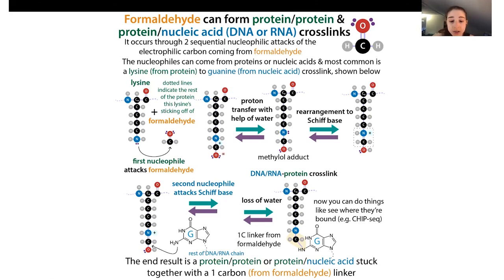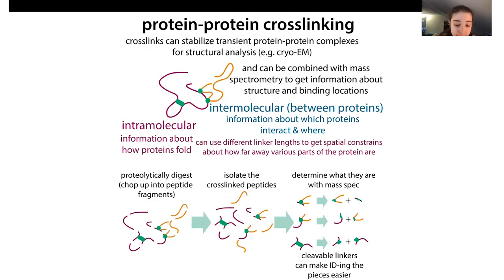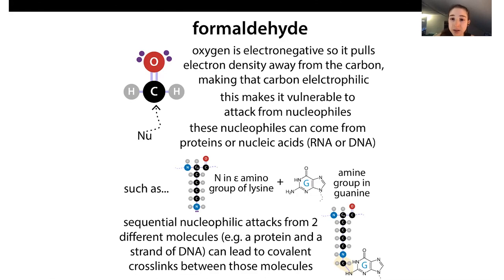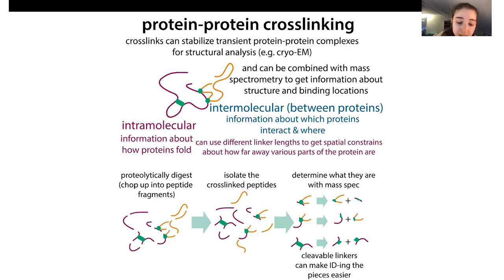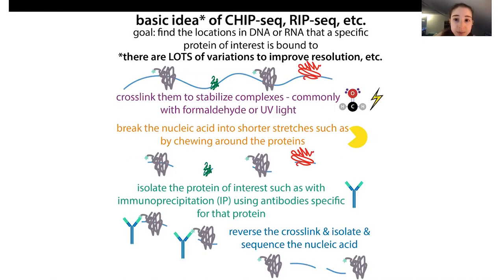Now they're stuck together, and you can do things like try to figure out where they're stuck together. A problem can be that you're having protein-protein crosslinking as well as protein-nucleic acid crosslinking. If you want to do something like ChIP-seq or RIP-seq, where you're trying to crosslink a protein to DNA or RNA, this complicates things.